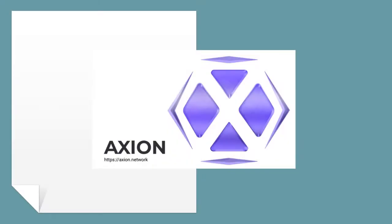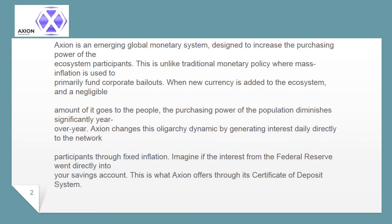Axion is an emerging global monetary system designed to increase the purchasing power of their ecosystem participants. This is unlike traditional monetary policy where mass inflation is used to primarily fund corporate bailouts. When new currency is added to the ecosystem, only a negligible amount of it goes to the people, and the purchasing power of the population diminishes significantly year over year.